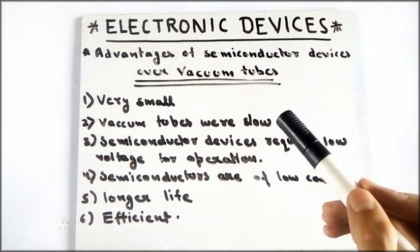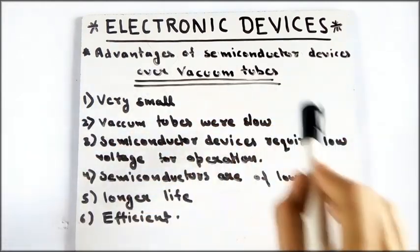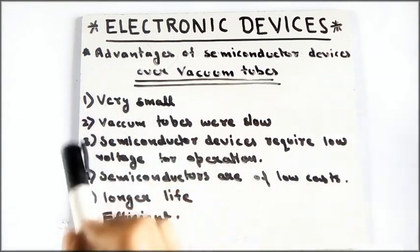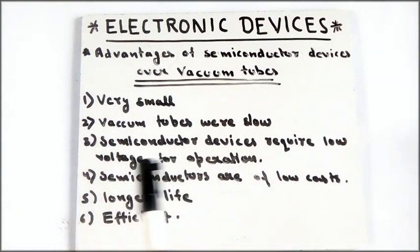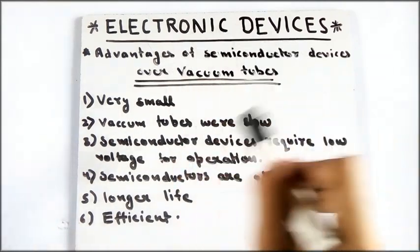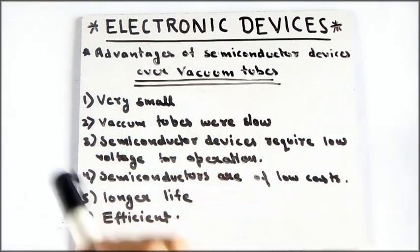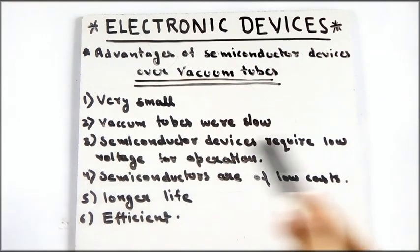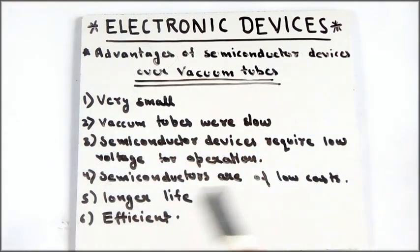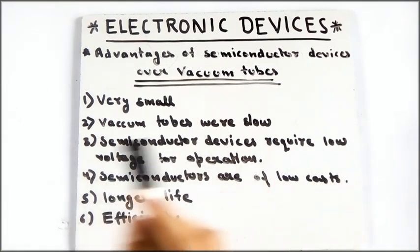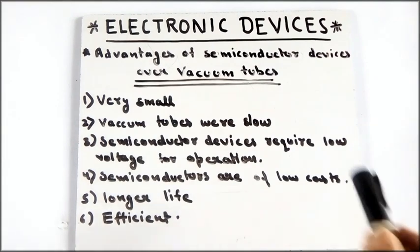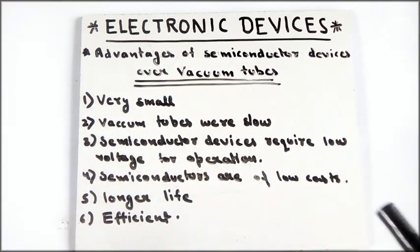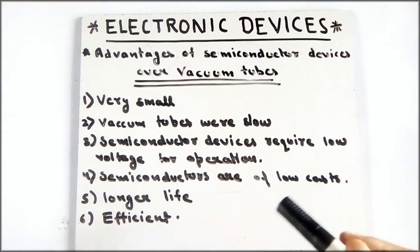Semiconductor devices also require low voltage to operate, whereas we need high voltage for vacuum tubes. So semiconductor devices can be used in devices which take low voltage to operate. Semiconductor devices are also of low cost because for making a semiconductor device you mainly need silicon and other basic materials, whereas vacuum tubes require a lot more materials.